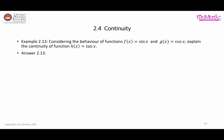We are going to consider the behavior of functions sine x and cosine x, and based on that, we are going to explain the continuity of tangent x. Recall that tangent x equals sine x over cosine x. We can clearly see that tangent x is a composite function made of dividing f(x) by g(x).